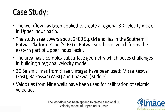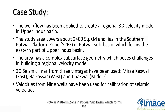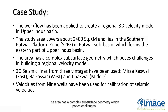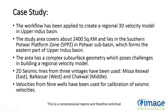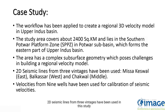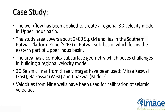The workflow has been applied to create a regional 3D velocity model of Upper Indus Basin. The study area covers about 2400 square kilometers and lies in the southern Potwar platform zone in Potwar Subbasin, which forms the eastern part of Upper Indus Basin. The area has a complex subsurface geometry which poses challenges in building a regional velocity model. This is a compressional regime and therefore anticlinal structures are pop-ups. 2D seismic lines from 3 vintages have been used in this study, where Misakaswal lines are in the east, Balqasar lines are in the west, and Chakwal lines are in the middle.